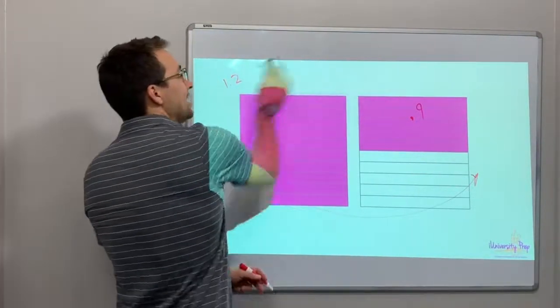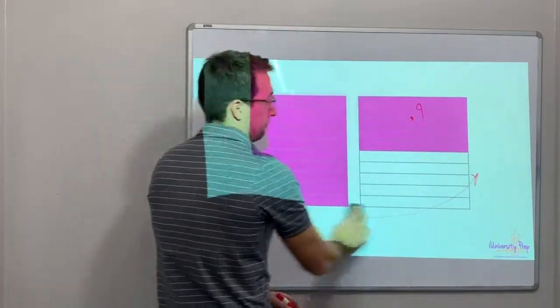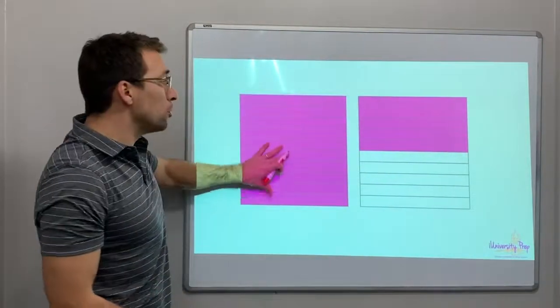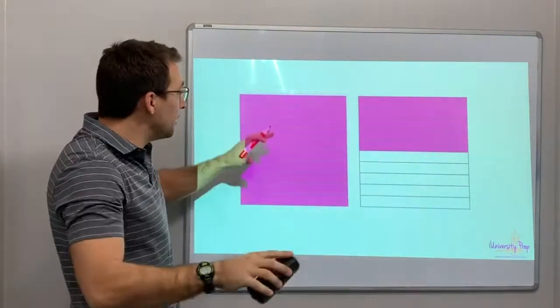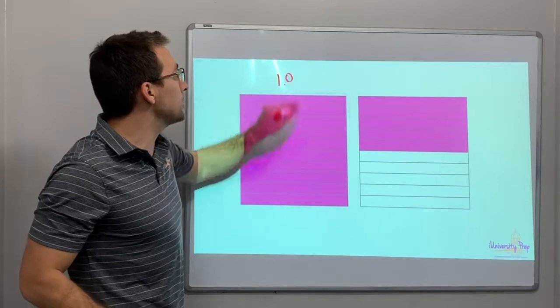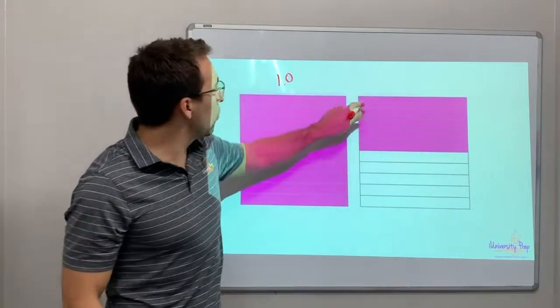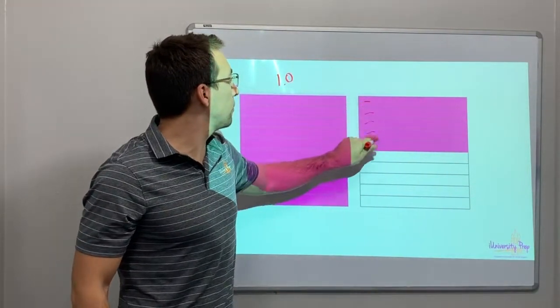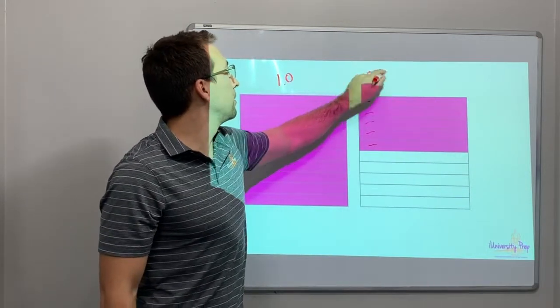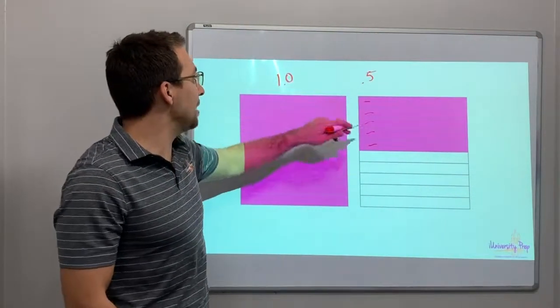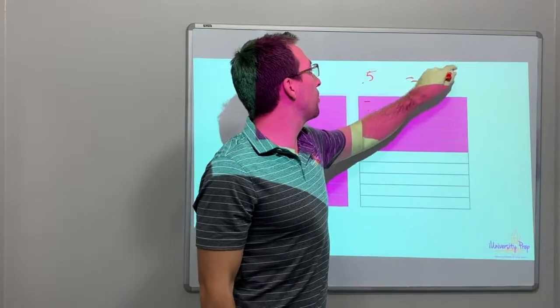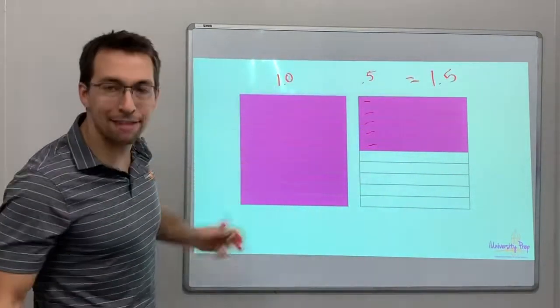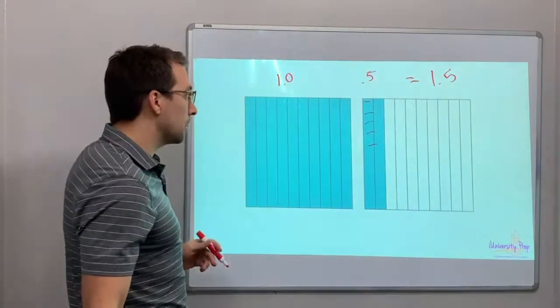Now, what does this picture represent? We have the full square. It's completely covered in. So this is one point zero. And we have one, two, three, four, five. So this is point five. So together, that equals one point five. We have one and a half blocks.